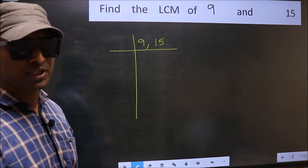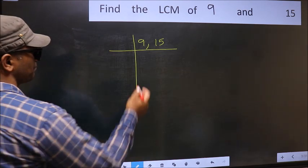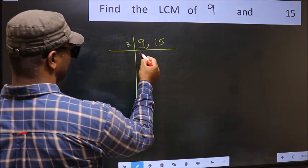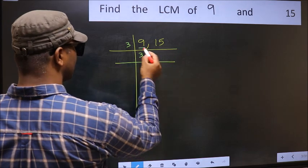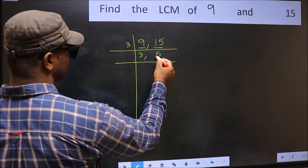Now you should focus on to the first number, which is 9 here. 9 is 3, 3 is 9. The other number, 15. When do we get 15 in 3 table? 3, 5 is 15.